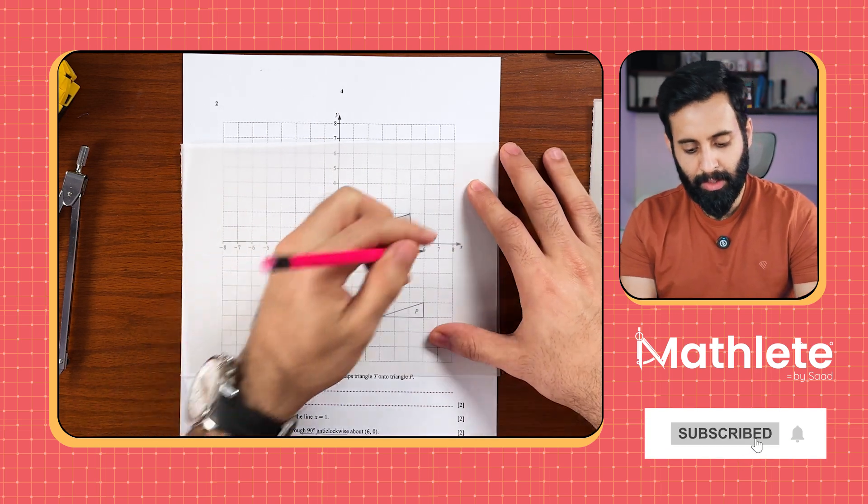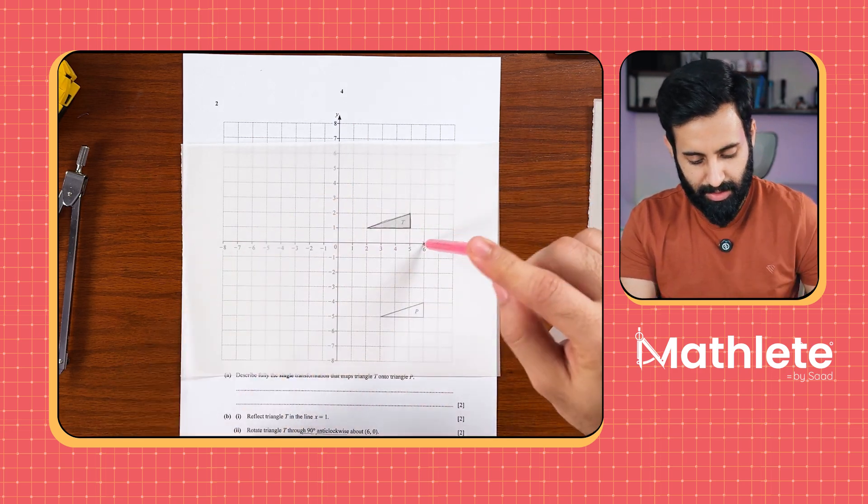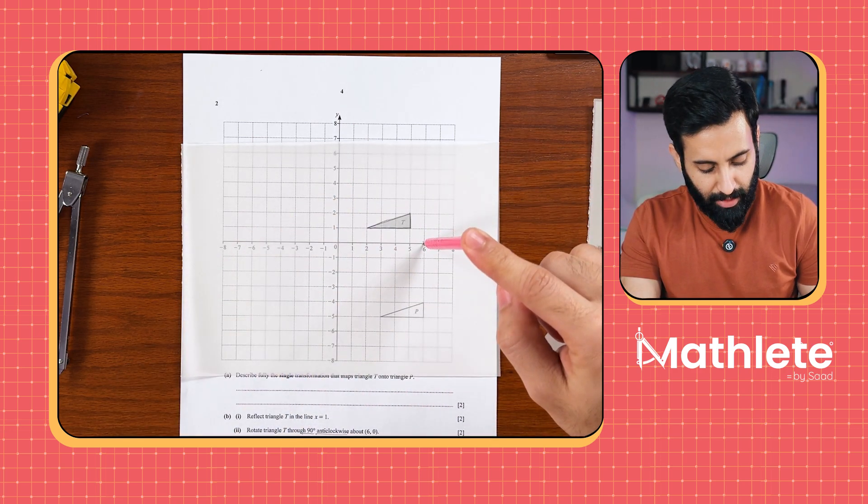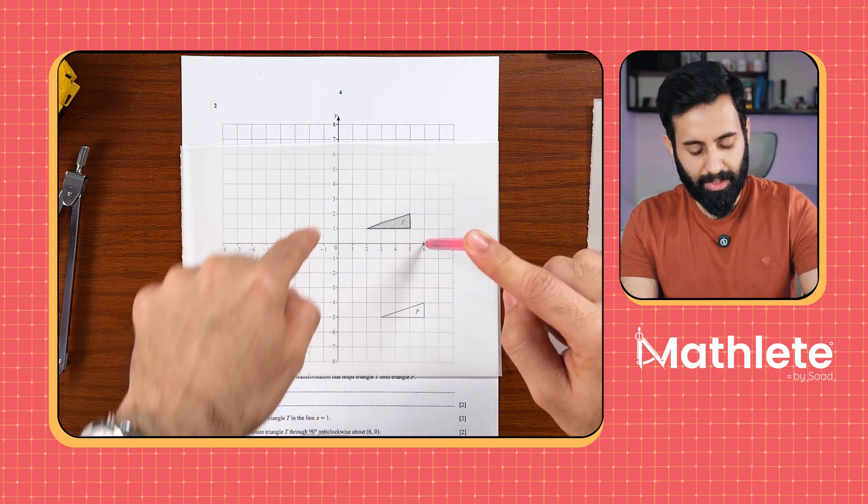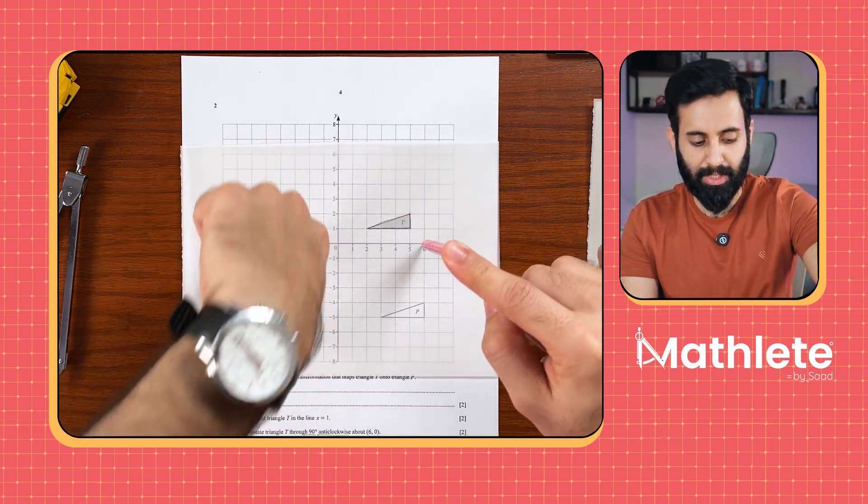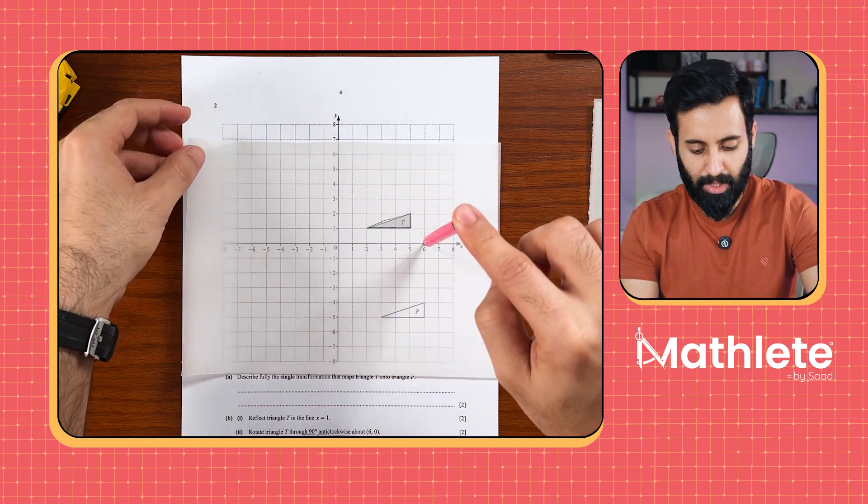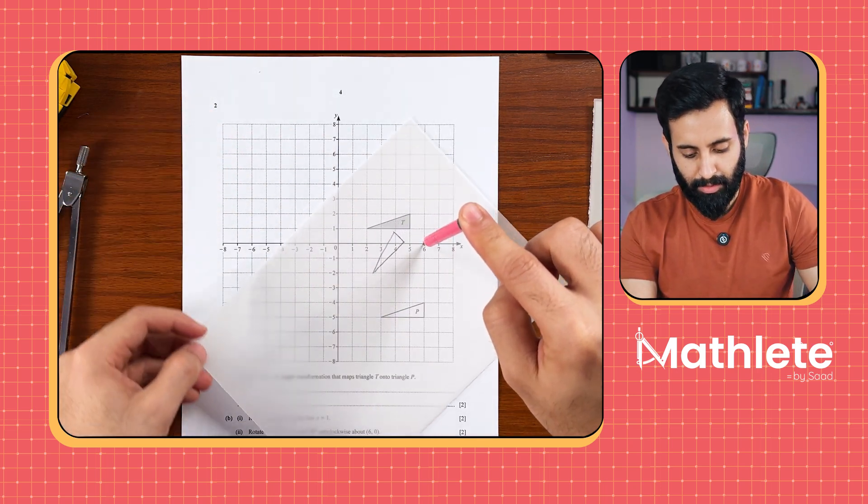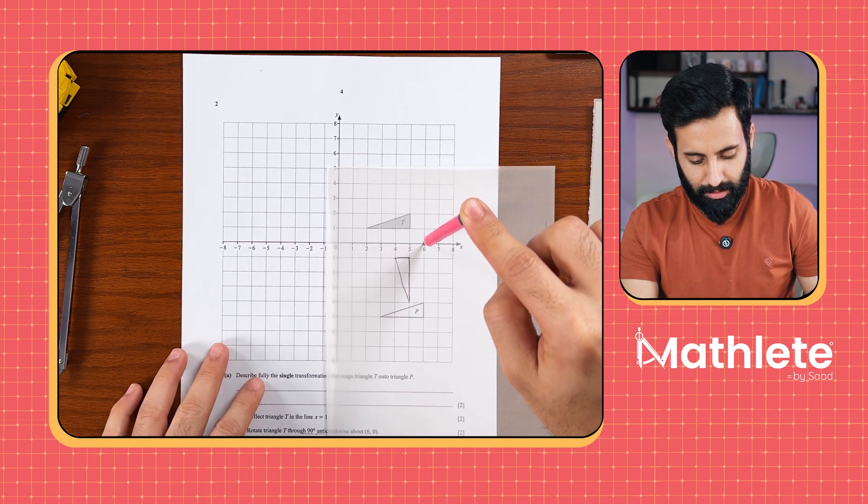Once you're done with that hold the tracing paper from the point which is the center of rotation, here it is and then rotate the tracing paper 90 degrees anti-clockwise. So 90 degrees anti-clockwise, that's clockwise, this is anti-clockwise. Once again a watch comes in handy, so this is anti-clockwise. So this is the direction in which I'm going to rotate it in. So keep doing that, keep doing that. That's it. Job done.